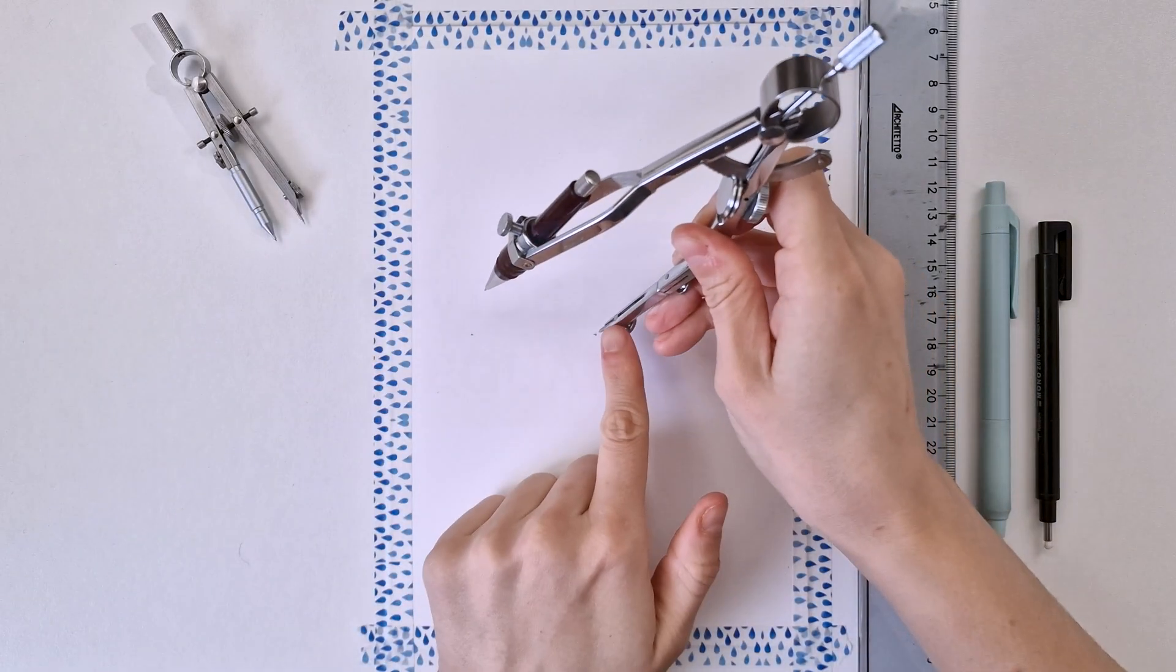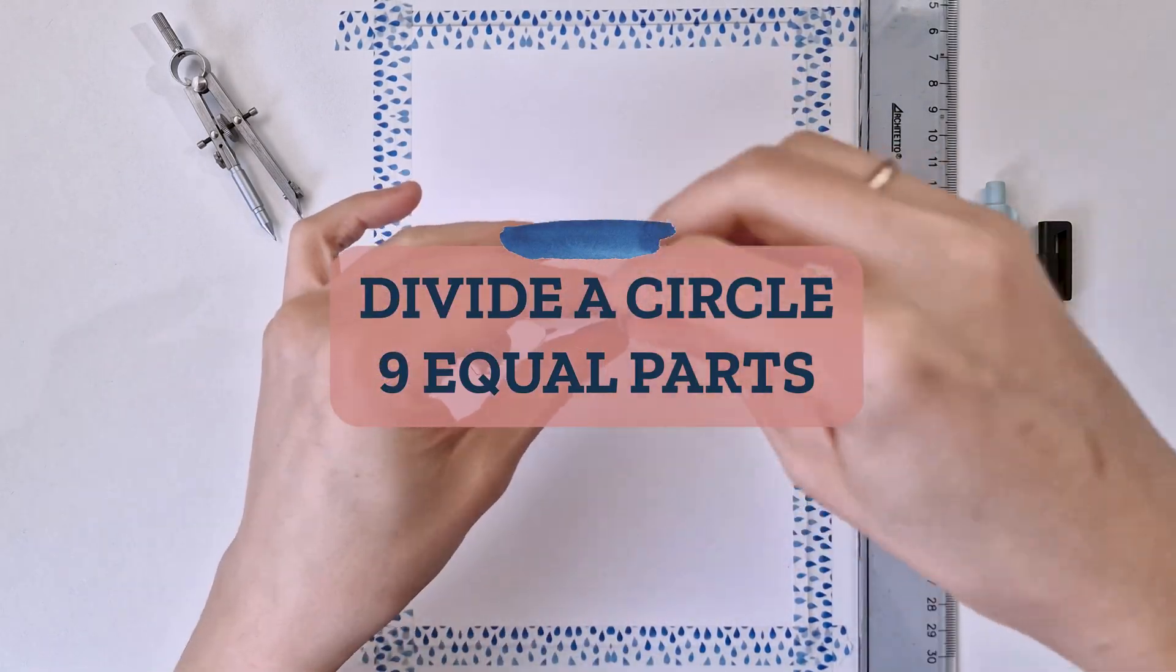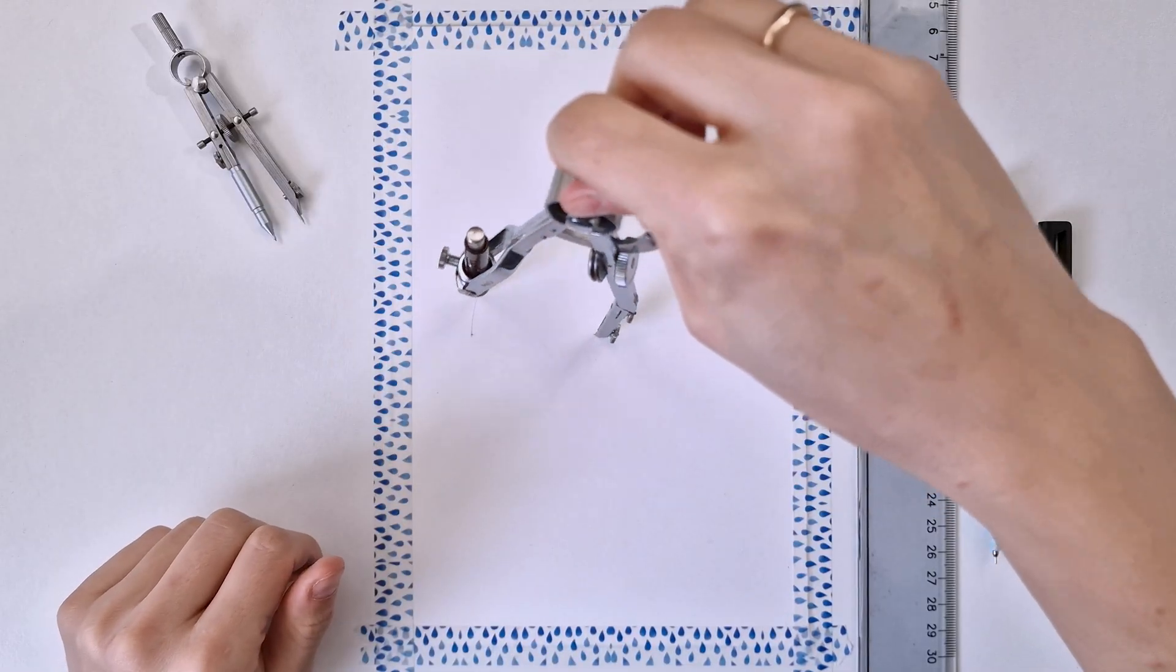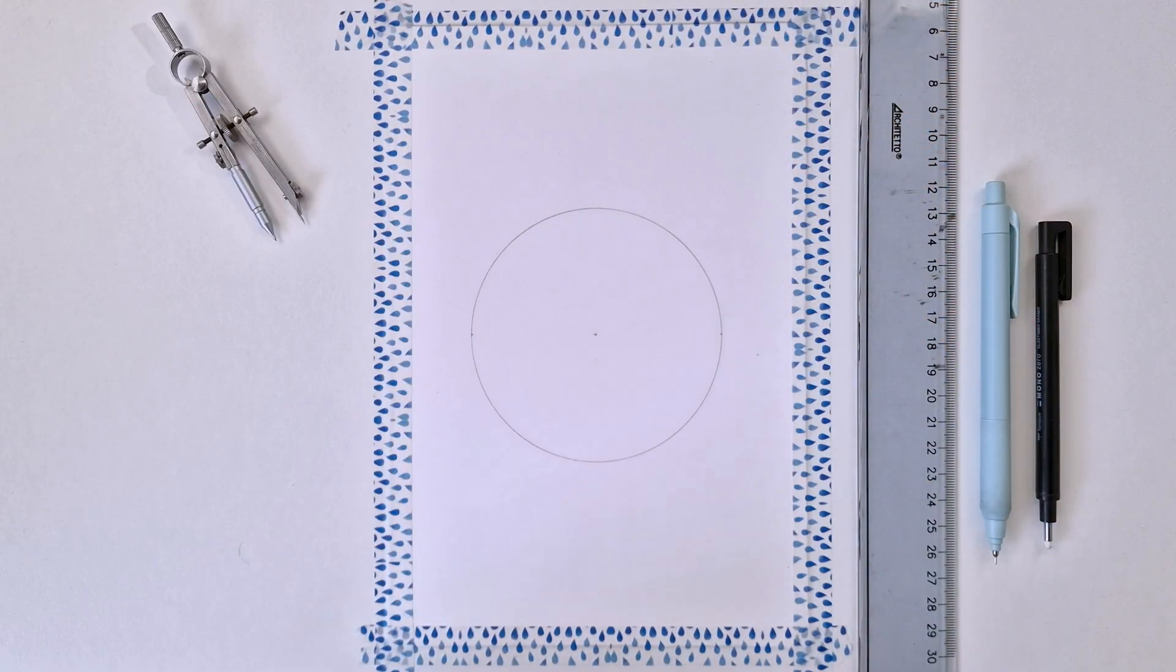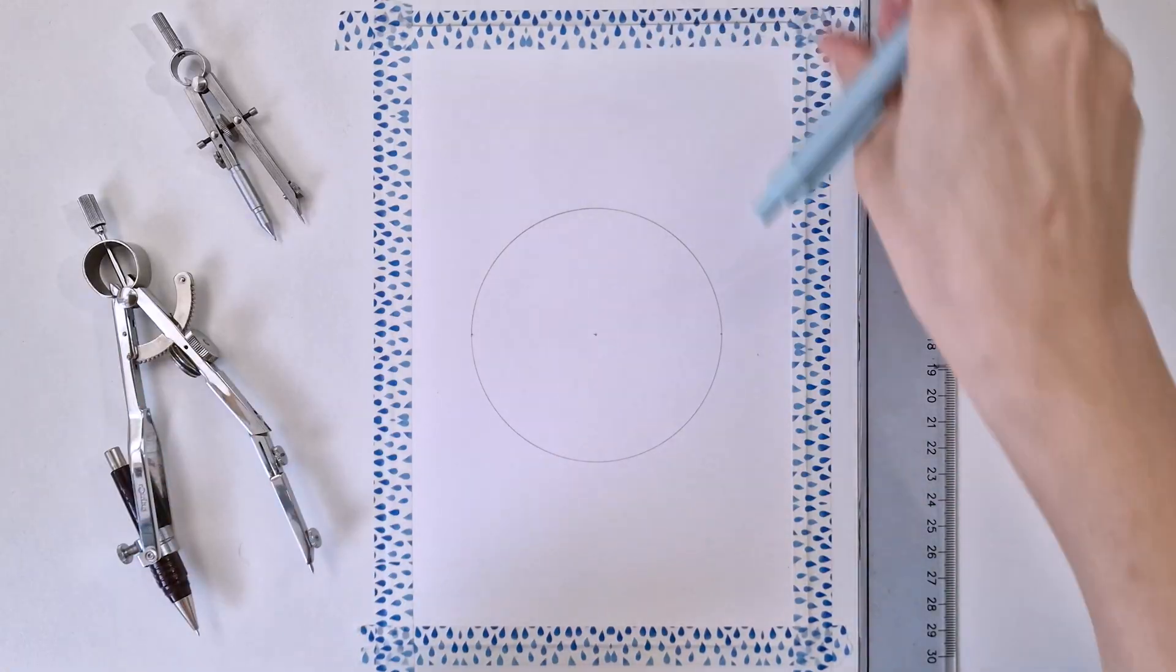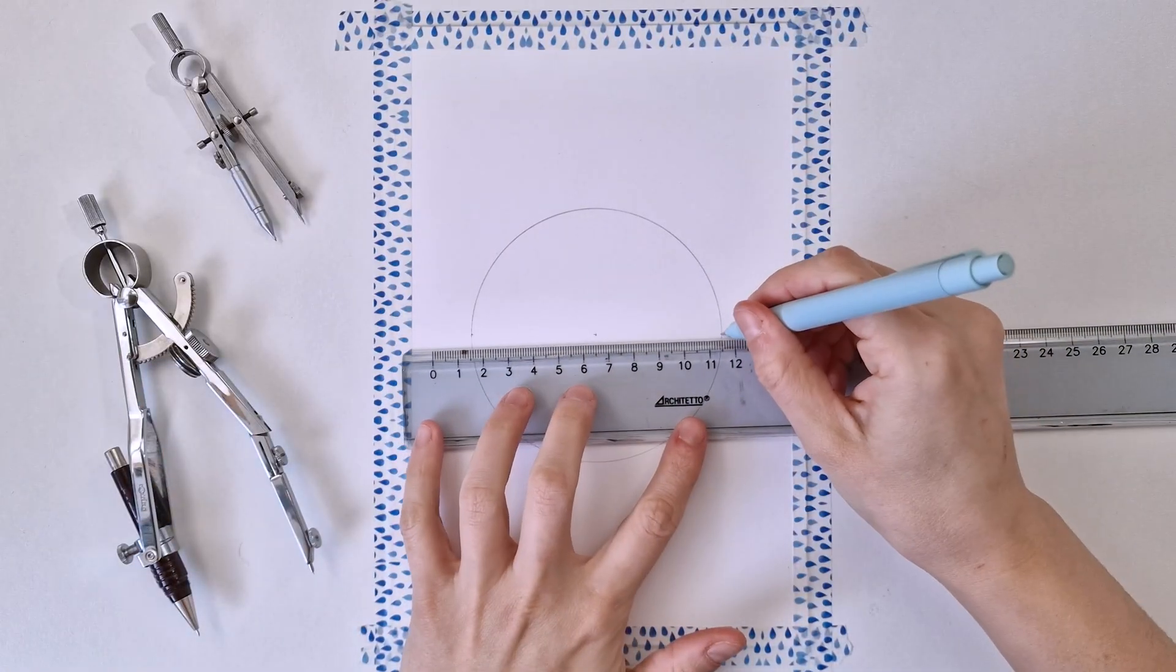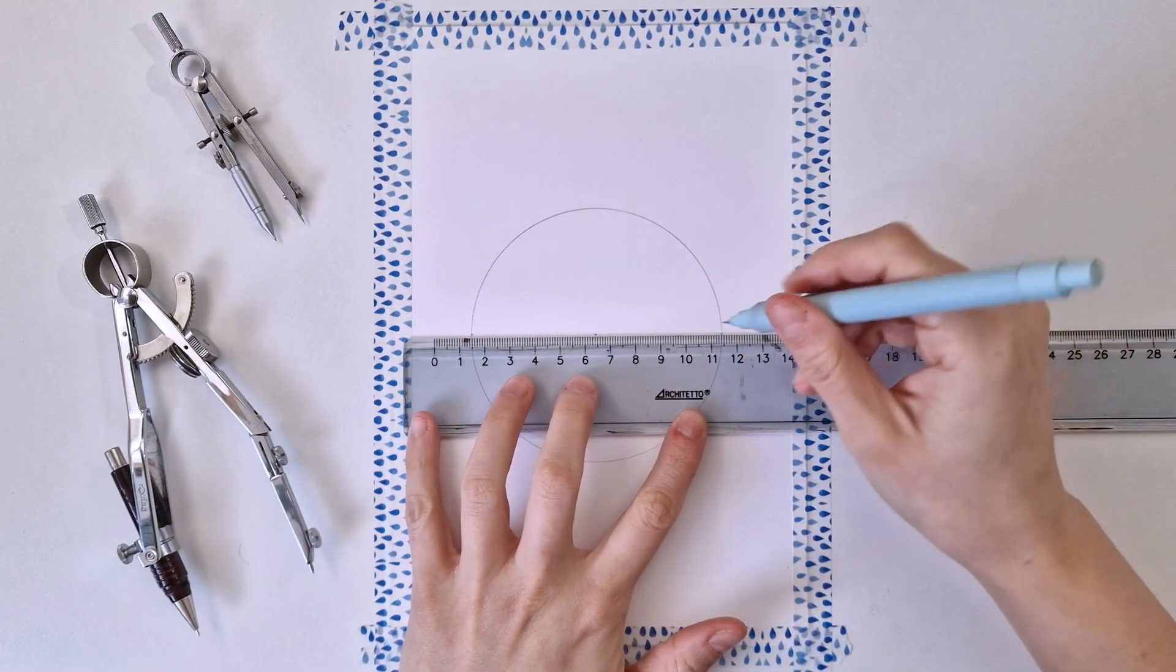Hello everyone, today we're going to learn how to divide a circle into nine equal parts. Let's start with our beautiful circle here. I'm using a five centimeter radius, but you can use any radius you like.